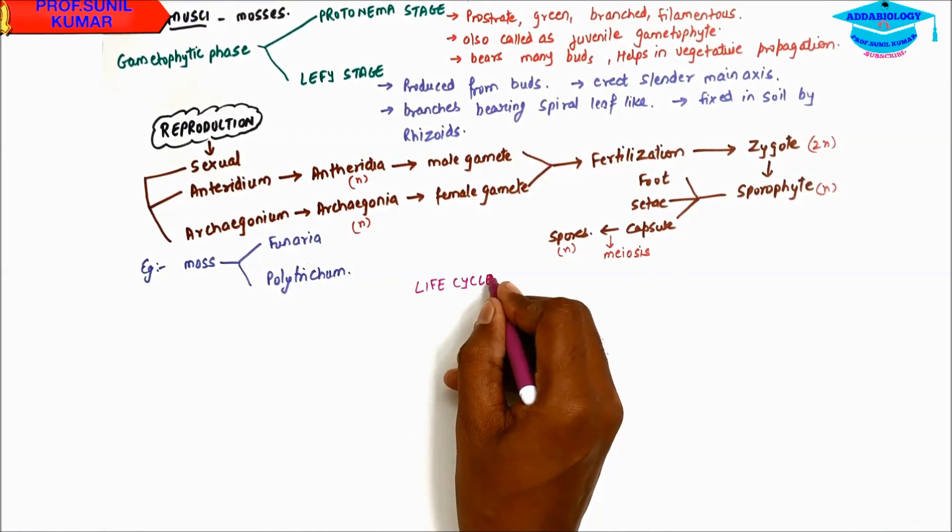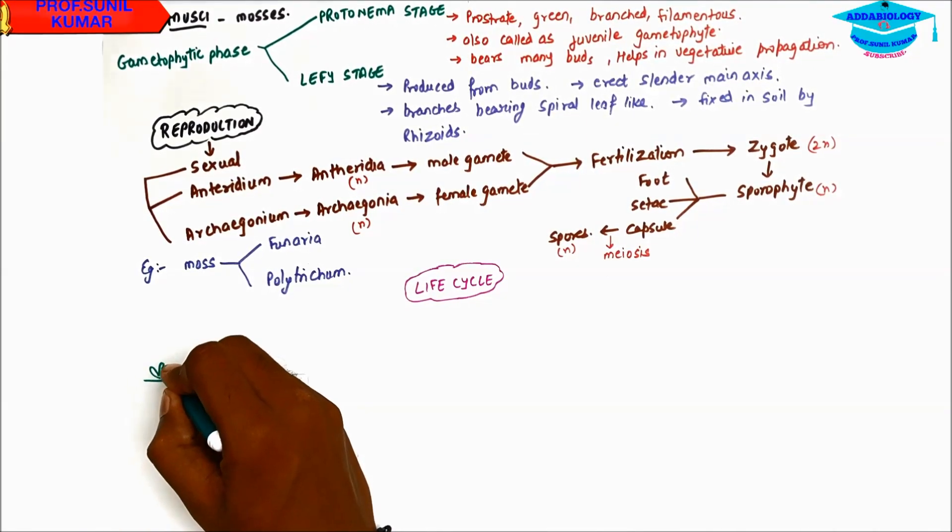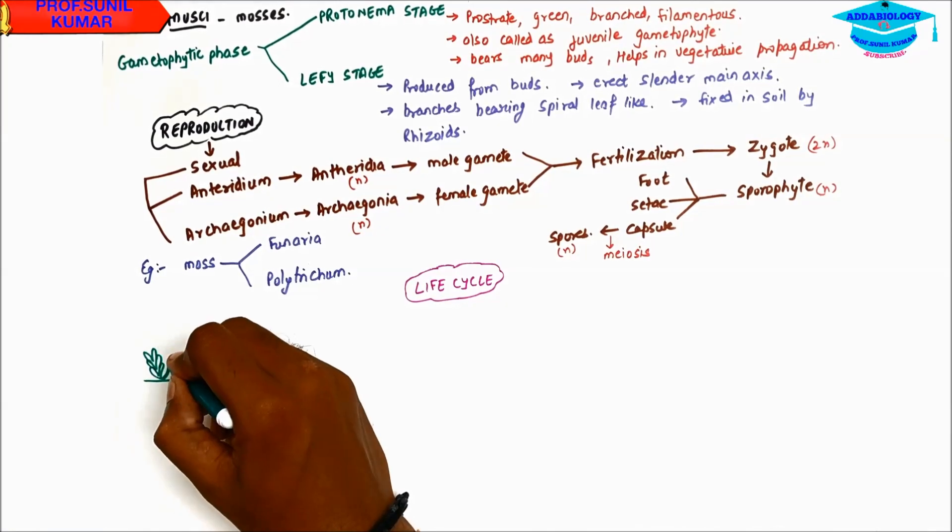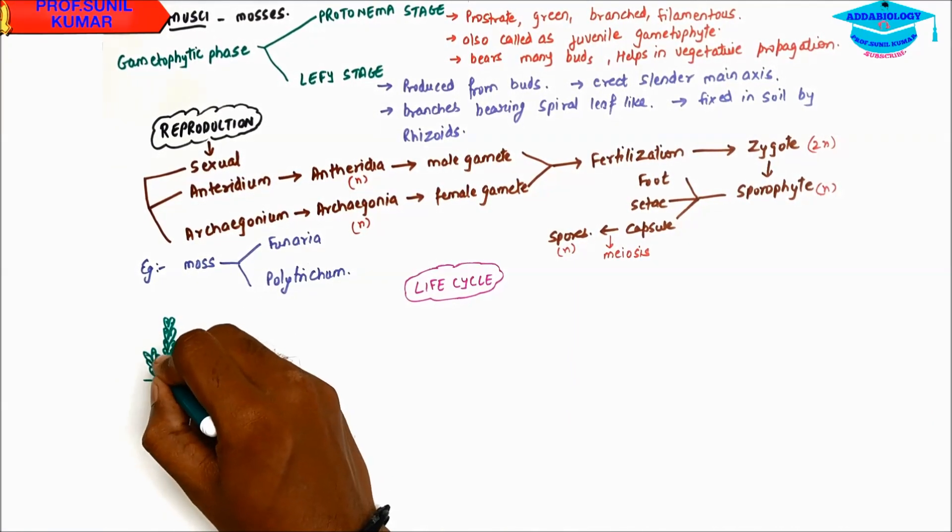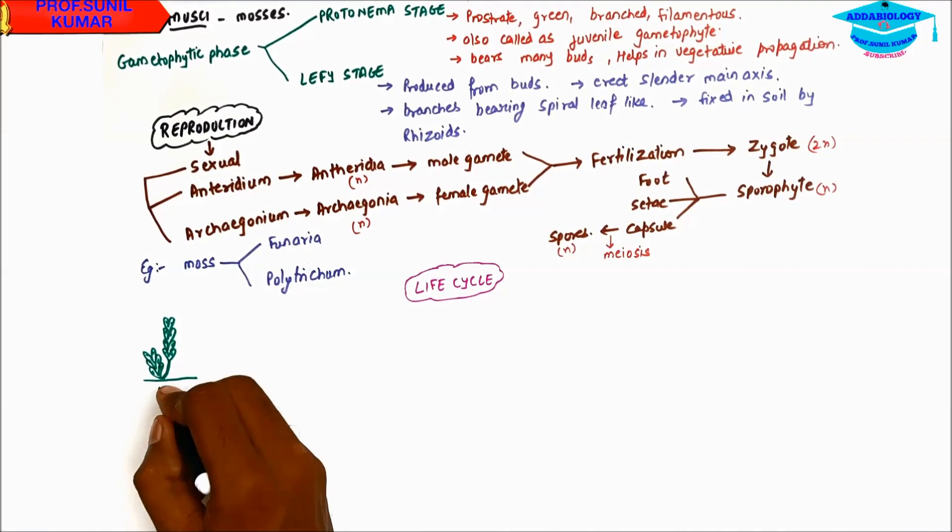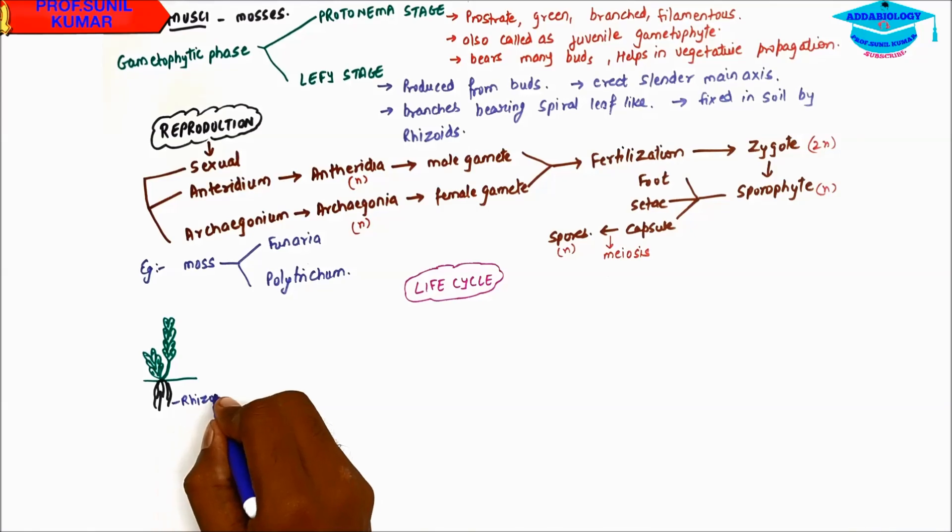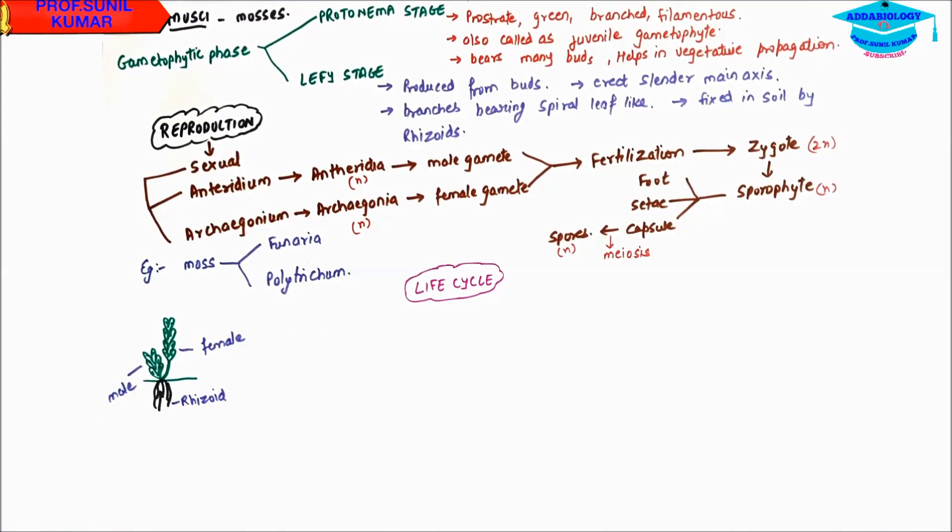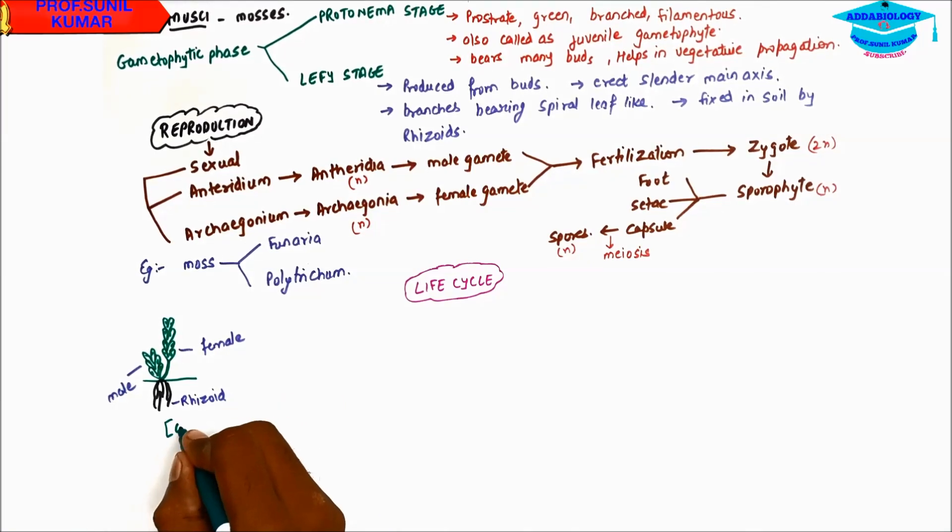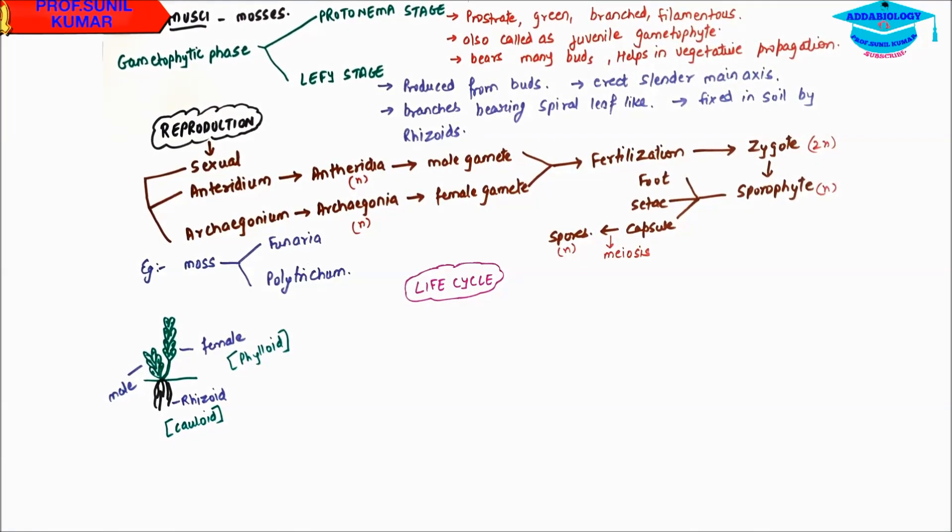Let us understand the life cycle. How does Funaria or the moss complete their life cycle? So let us assume this to be Funaria. The Funaria has two phases. The male gametophyte and the female gametophyte are present in the same. These are the rhizoids which will work like roots, help in absorption and fixation.